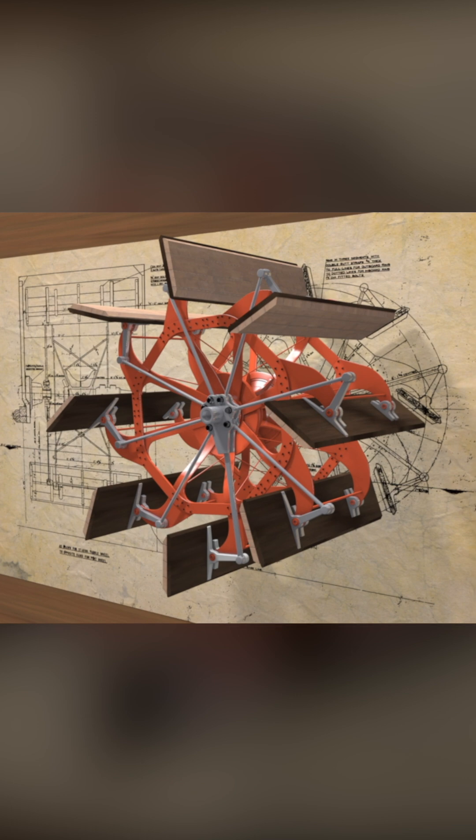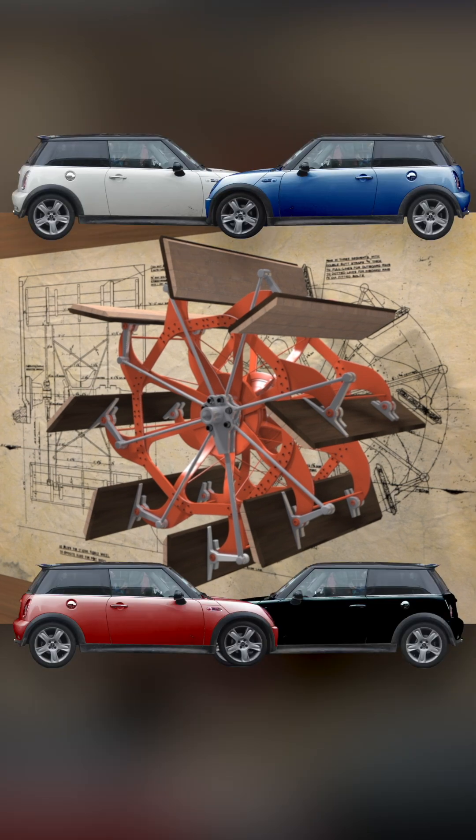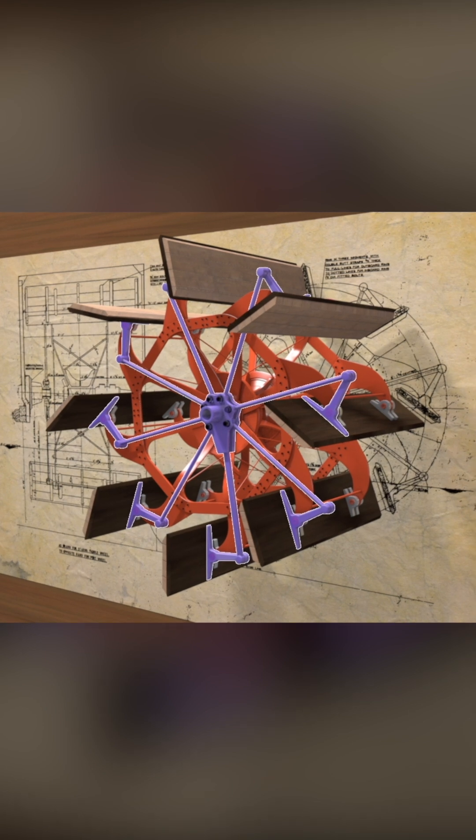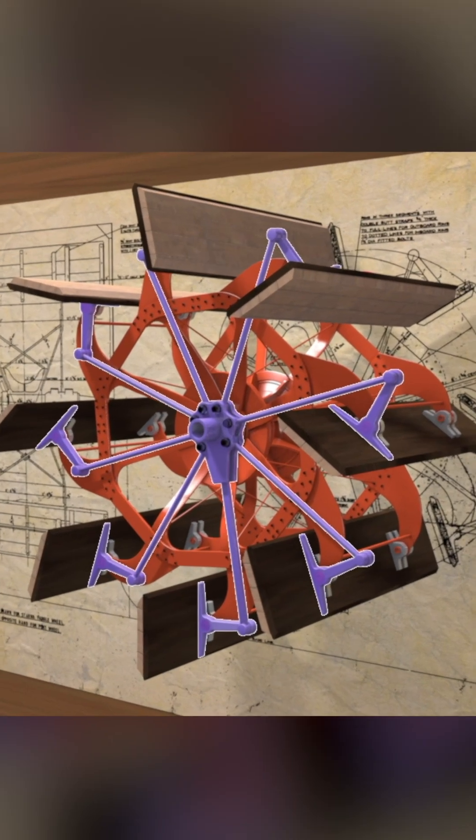Each wheel weighs 8 tons, that's about the same as 4 minis. The wheels are distinctive because of their float feathering gear.